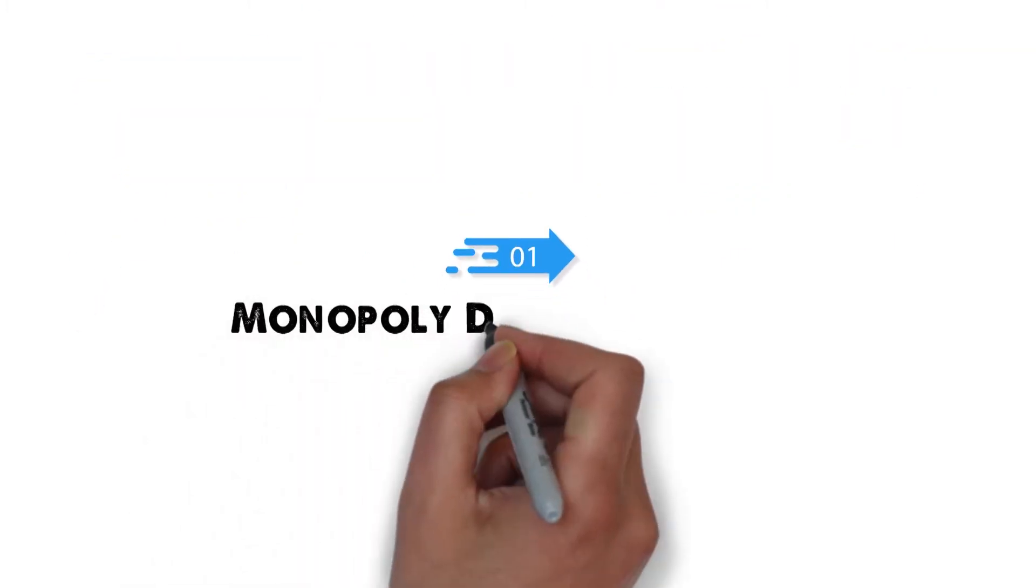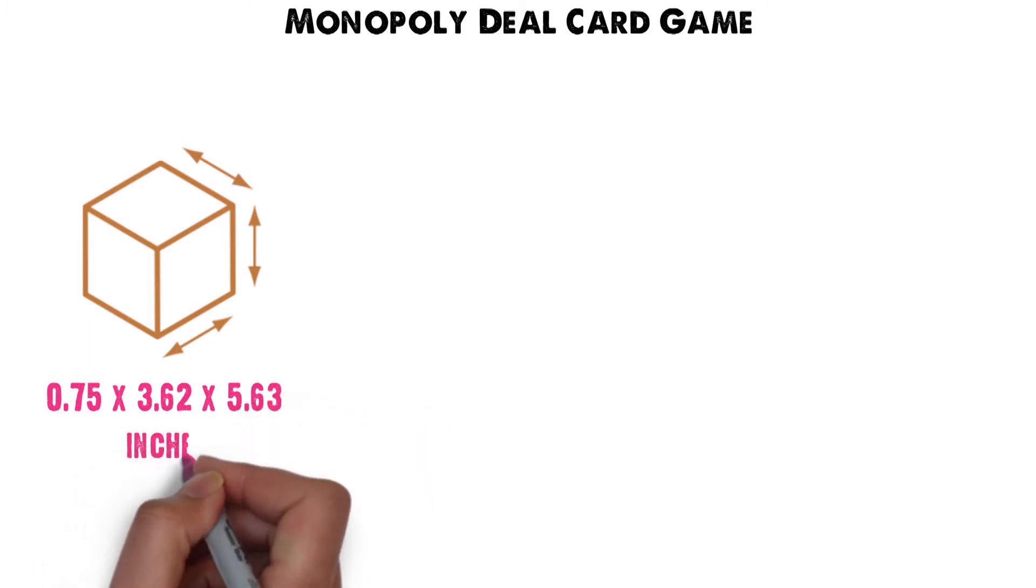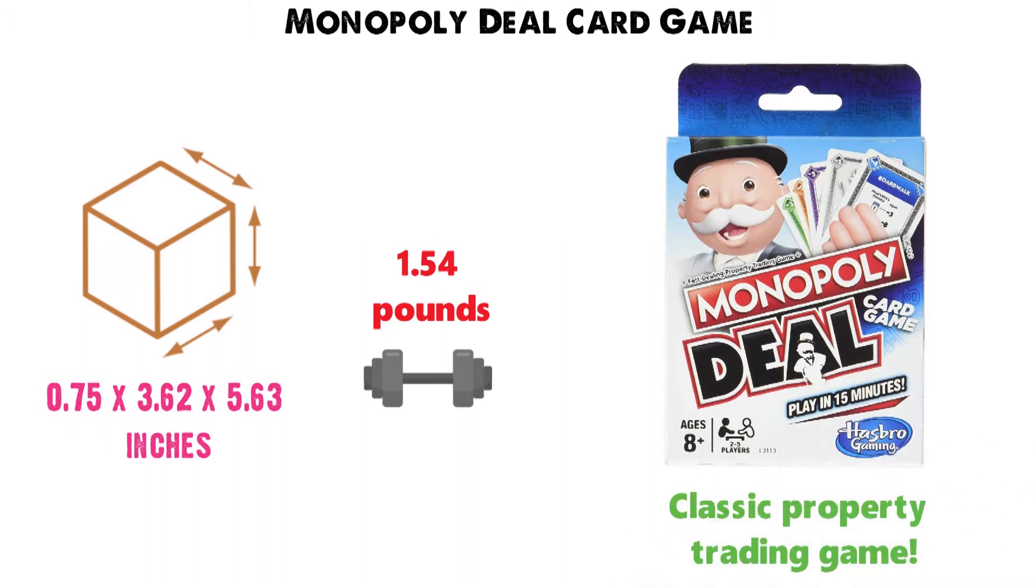At number 1 we have the Monopoly Deal Card Game. Dimensions of this product are 0.75 x 3.62 x 5.63 inches and it weighs 1.54 pounds. This set is a handy way to play the classic property trading game.